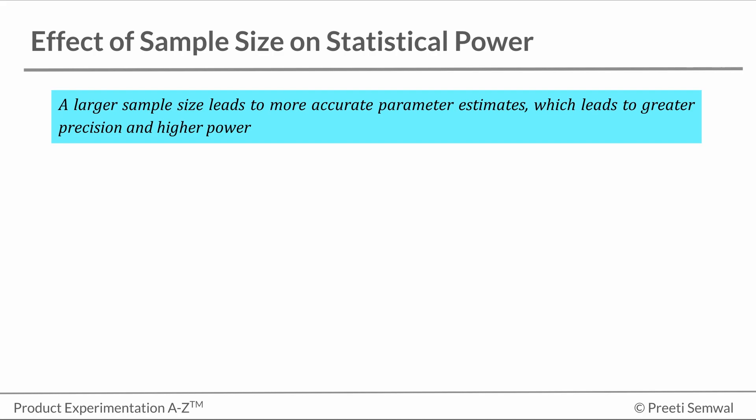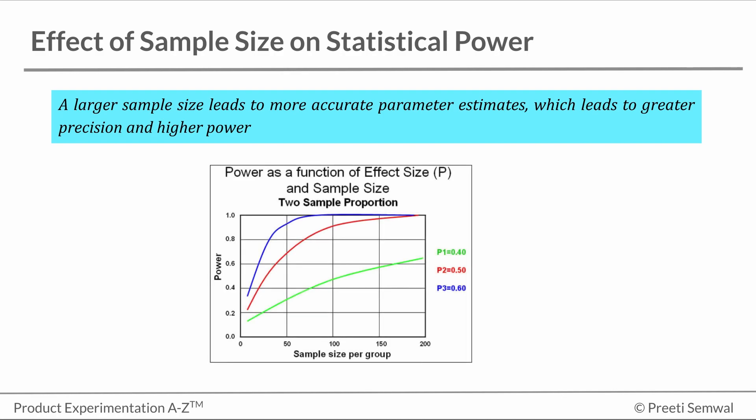So a good way to make the decision on what power to choose is by plotting a graph for the trade-off between power and sample size such as this one. You can see that the rate of increase in power starts to reduce dramatically at around 80% figure.